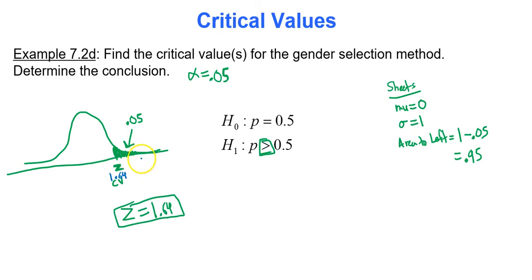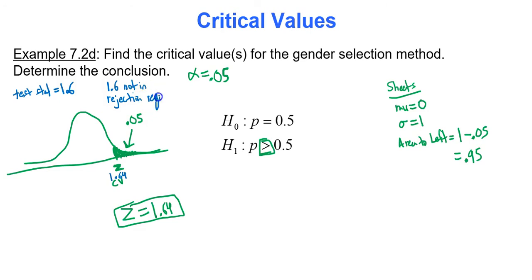Our test statistic was 1.60. Where does 1.60 lie? Does it lie within the shaded rejection region, or just outside? Since 1.60 is not in the critical region or rejection region, we fail to reject the null hypothesis. It's very important to draw the picture and have this visual.